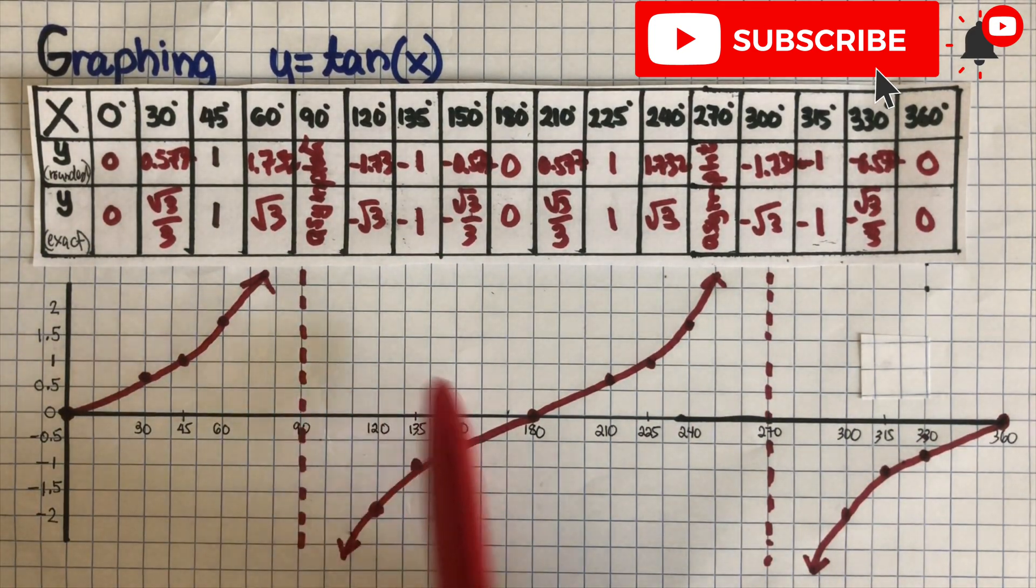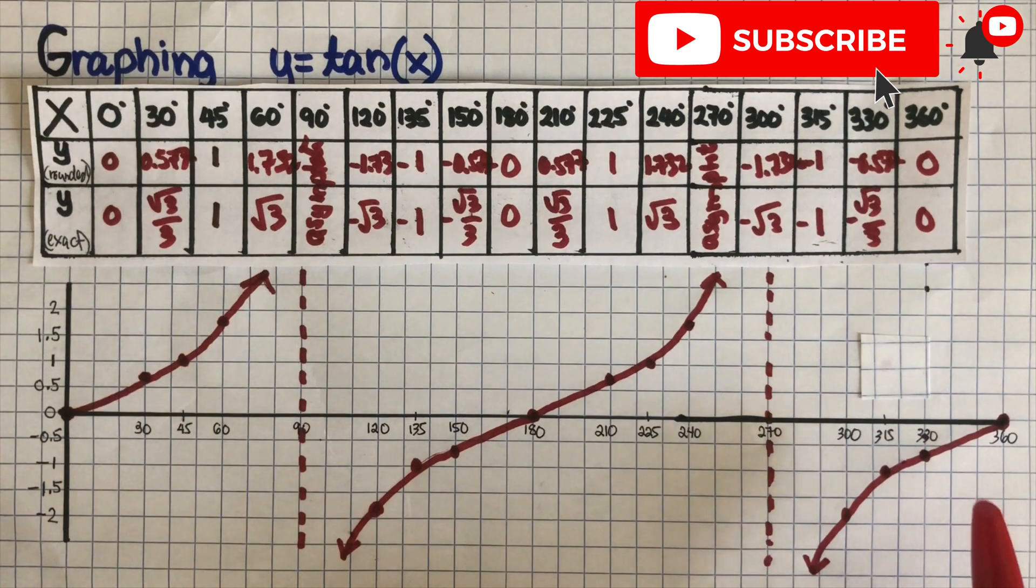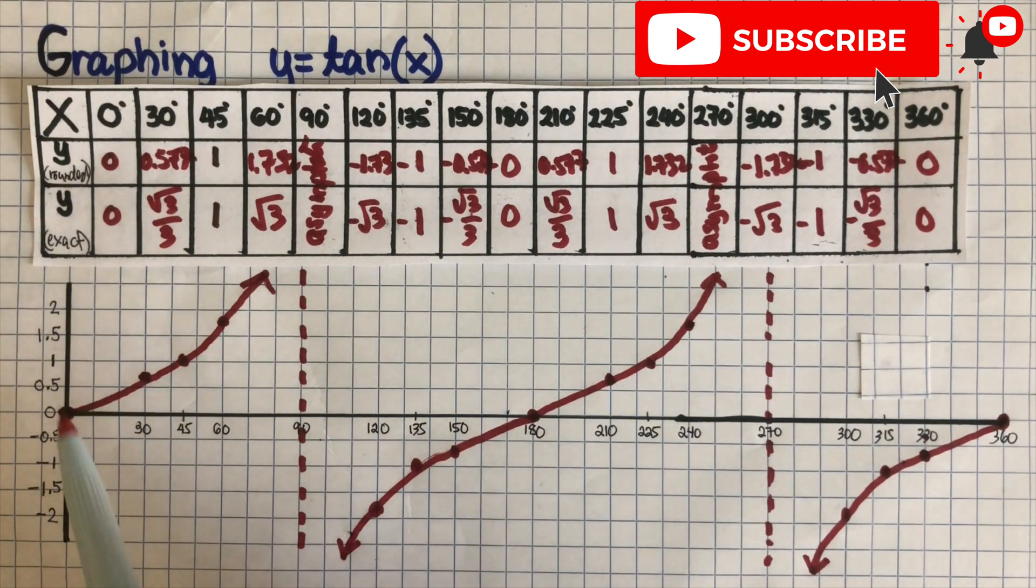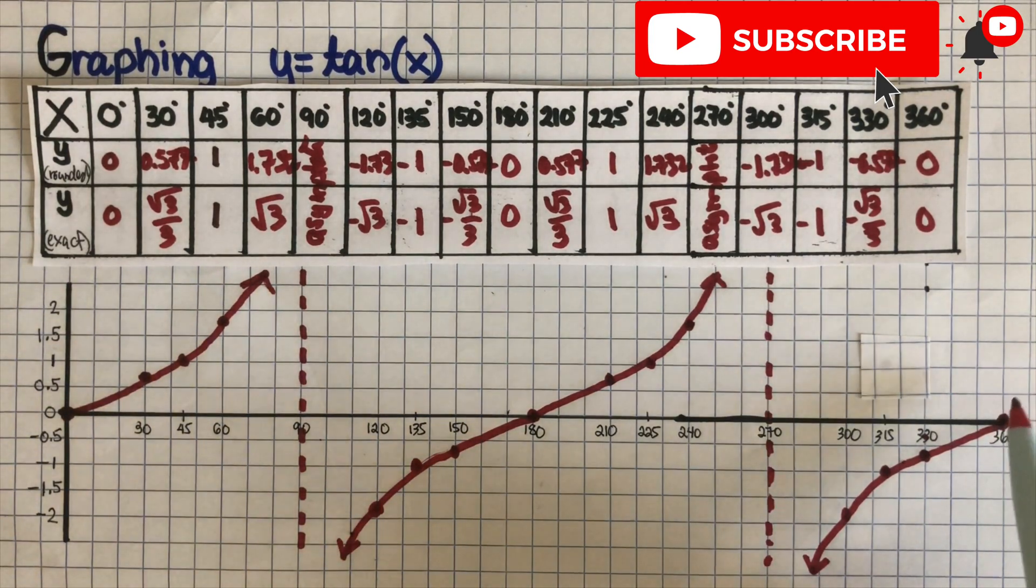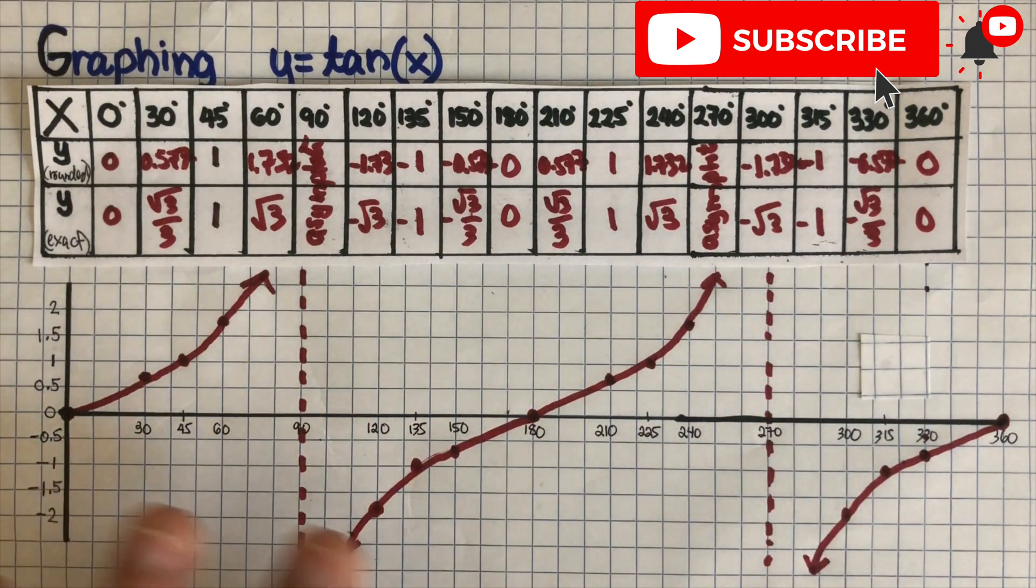So this is one cycle of tangent function. Now if we have a negative, it's going to be the other way around. It's going to go this way, and the negative y equals negative tangent is going to be the opposite.